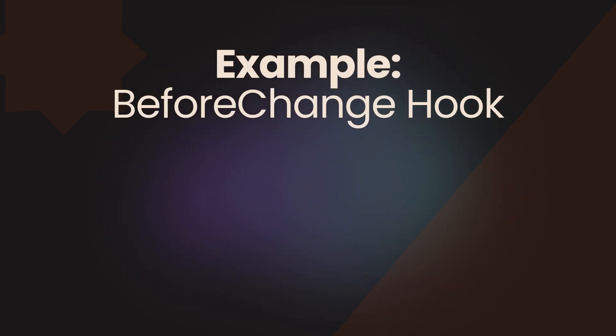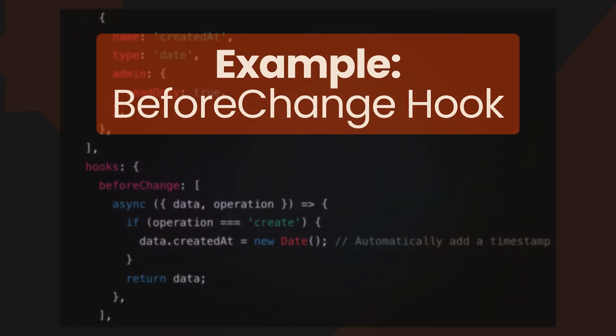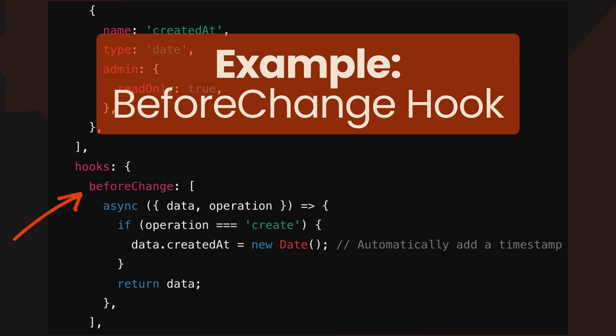Let's look at an example of a before change hook in action. Imagine you're working on a post collection and you want to ensure that every new post has a timestamp for when it was created. Here's the breakdown. First, define the hook: add the before change hook to the post collection. Second, write the logic: check if the operation is create and then add a timestamp to the created at field. Third, test the hook: create a new post and verify that the timestamp is automatically generated. This process ensures data consistency and reduces manual effort for content editors.